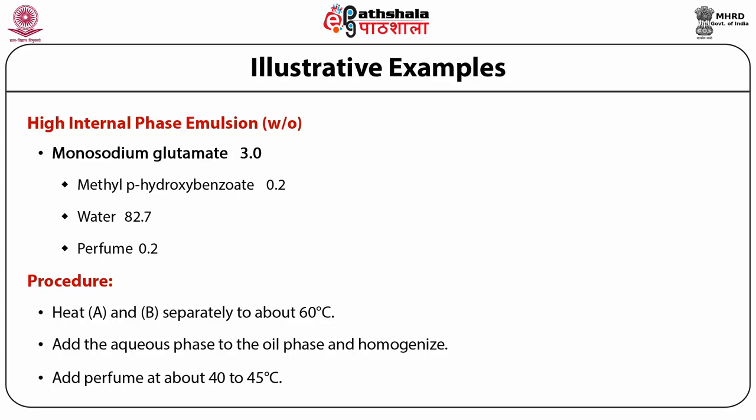This low viscosity skin cream illustrates that exceptionally high internal phase ratio products can exhibit reasonable stability. Glyceryl monoisostearate has an HLB of about 3.5 to 4 and is a good water-in-oil emulsifier. The key to the stability of this preparation is the use of an amino acid salt as an emulsion stabilizer, as documented in European Patent 9404 of 4 February 1980, though no theoretical basis for this concept has been provided.